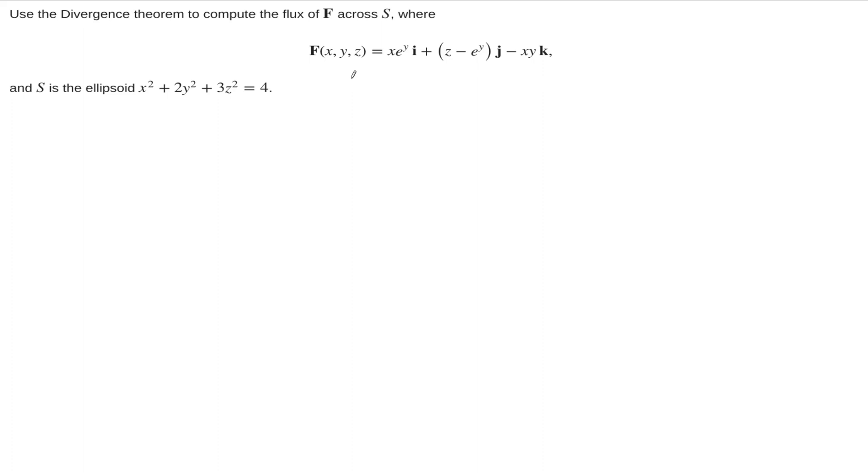Let's start then by computing the divergence of this vector field. So the divergence of F, remember this is just del dotted with F, and that's just the sum of the first partial derivatives of the components, component-wise partial derivatives, of our vector field.